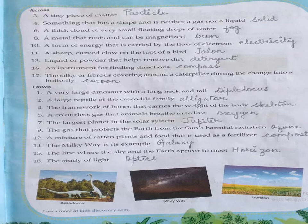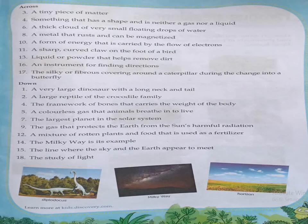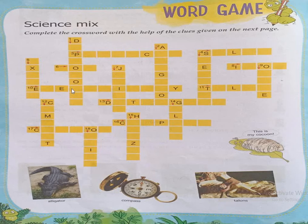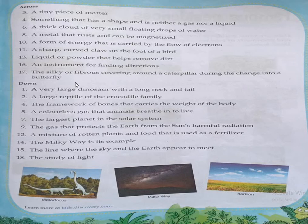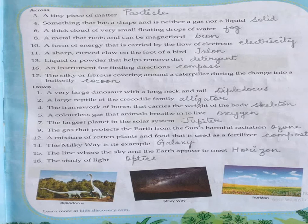Now we'll be discussing the down clues. The very first one is: a very large dinosaur with a long neck and tail. In the crossword it starts with D, and the third letter is P. That is diplodocus — a large dinosaur with a long neck and tail which starts with D.